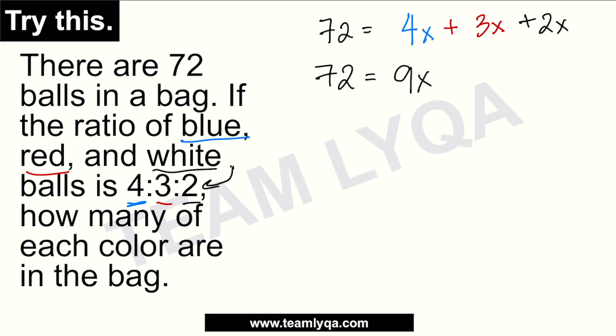This will be 9x. Para makuha yung x, i-divide natin both sides by 9. Maka-cancel na ito kasi 9 over 9 is just 1. We will be left with x equal to 72 over 9, or 72 divided by 9, which is 8, kasi ang 8 times 9 is 72. Dahil alam na natin yung x, malalaman na natin kung how many of each color are in the bag. All we have to do is substitute x = 8 into each term.